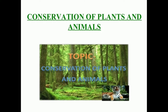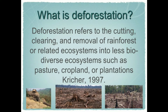Conservation of Plants and Animals — conservation means protection of plants and animals. In this lesson, first of all, we talk about Deforestation and its causes. Deforestation means clearing of forests and using that land for other purposes.